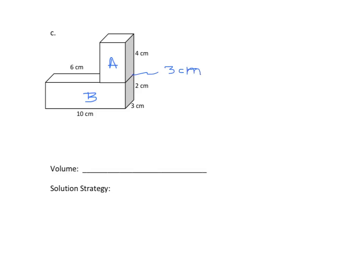We're also missing another dimension. We see that the total length of B is 10 centimeters, and the distance from the edge of B to the edge of A is 6 centimeters. So we have to do a little math here: 10 minus 6 equals 4 centimeters. We can say that this missing dimension is 4 centimeters.